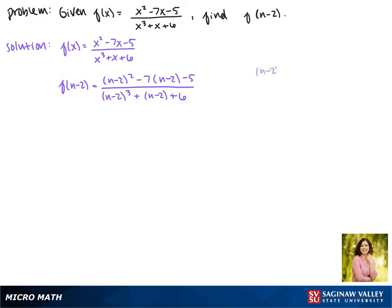So by multiplying this out, we find that n minus 2 squared equals n squared minus 4n plus 4. And then that n minus 2 cubed is n cubed minus 6n squared plus 12n minus 8. Now we're going to plug these into our equation.